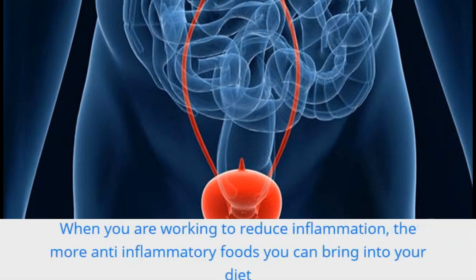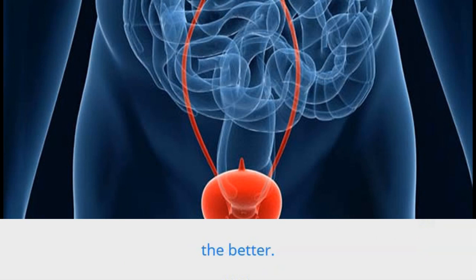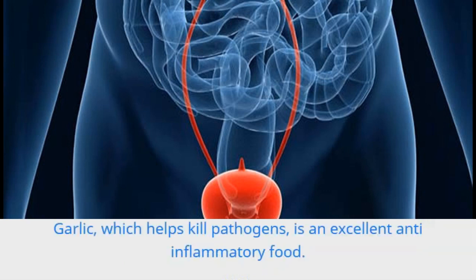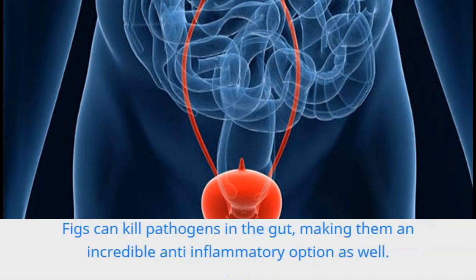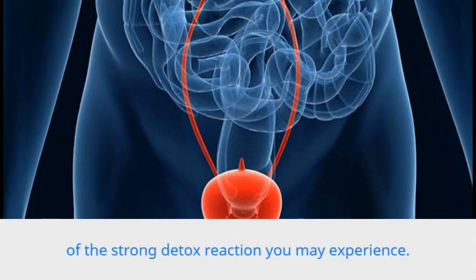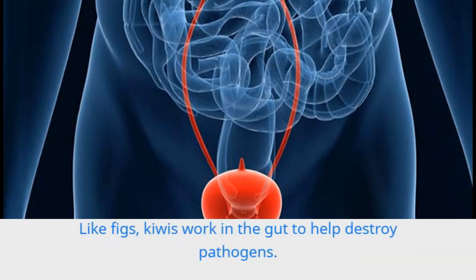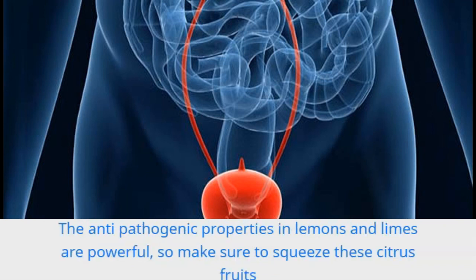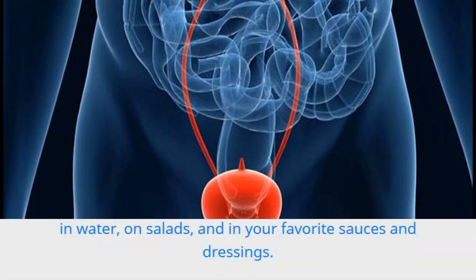When you are working to reduce inflammation, the more anti-inflammatory foods you can bring into your diet the better. Garlic, which helps kill pathogens, is an excellent anti-inflammatory food. Figs can kill pathogens in the gut, making them an incredible anti-inflammatory option as well — if you have a number of pathogens in your system, it is best not to eat too many figs in one sitting because of the strong detox reaction you may experience. Kiwis work in the gut to help destroy pathogens. The anti-pathogenic properties in lemons and limes are powerful, so make sure to squeeze these citrus fruits in water, on salads, and in your favorite sauces and dressings.